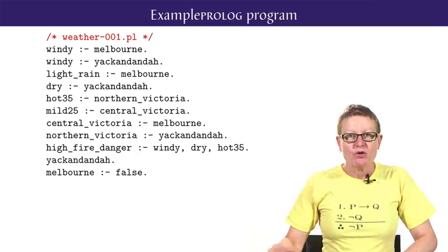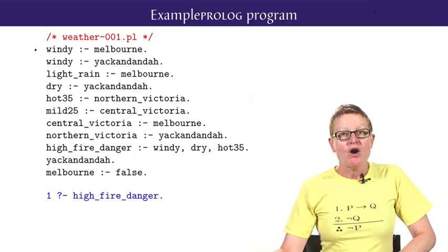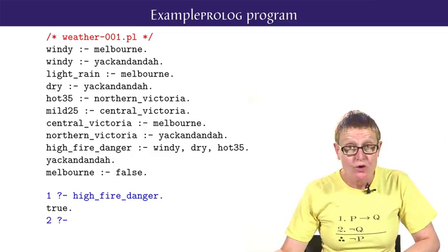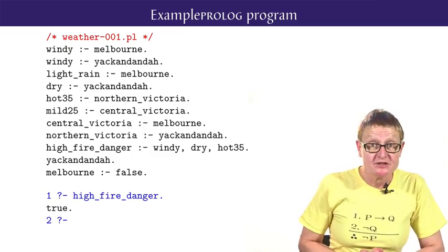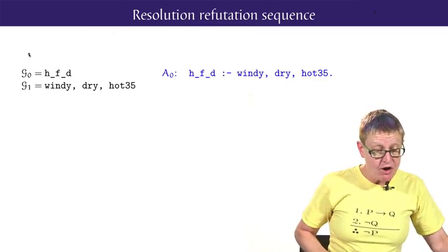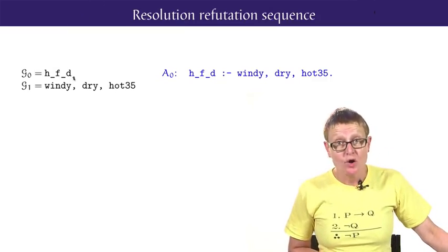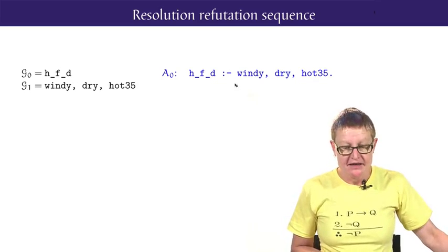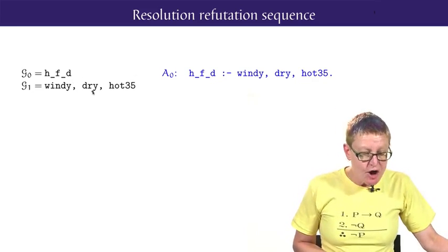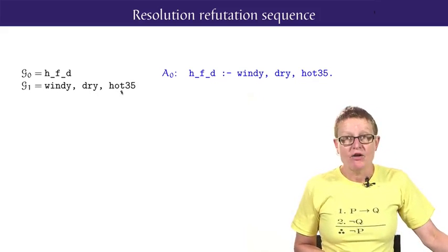Let's go back to our sample weather program from lesson 6-2. The query of the goal high fire danger is answered by Prolog with true. What is the resolution refutation sequence used to answer this query? Starting with the goal high fire danger, Prolog looks for all the program clauses with high fire danger as its head. There is only one of them. The first resolution step then produces the goal G1, the list of three atoms: windy, dry, hot35.